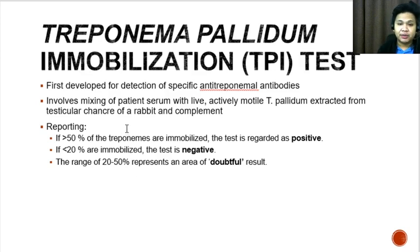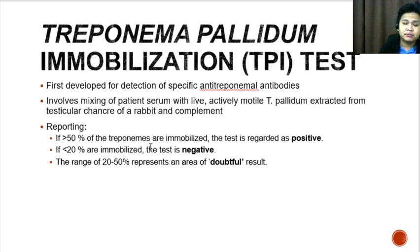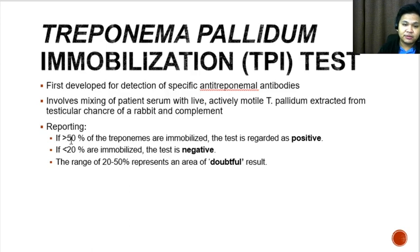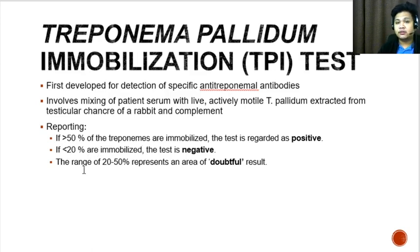The first treponemal test developed was the Treponema pallidum Immobilization Test, or TPI. It involves mixing patient serum with live, actively motile Treponema pallidum extracted from the testicular chancre of a rabbit, along with complement. The test is reported as positive if more than 50% of the treponemes are immobilized, negative if less than 20% are immobilized, and doubtful if the range is between 20% and 50%.